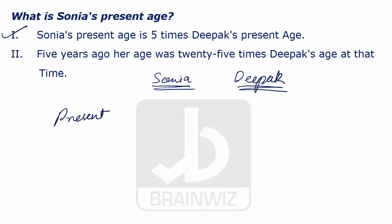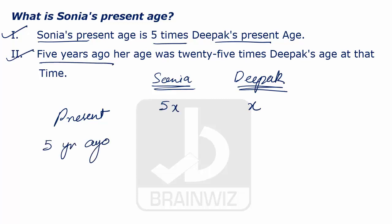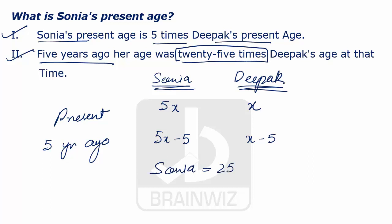From the first statement we can say that Sonia's age is five times of Deepak's present age. Let Deepak's present age be x; at that point of time Sonia will be 5x. Now using the second statement, five years ago Sonia will be 5x minus 5 and Deepak will be x minus 5, and we see the relationship that Sonia is 25 times Deepak's age. We substitute these values in the given equation: Sonia's age five years back is 5x minus 5 and Deepak's age is x minus 5.